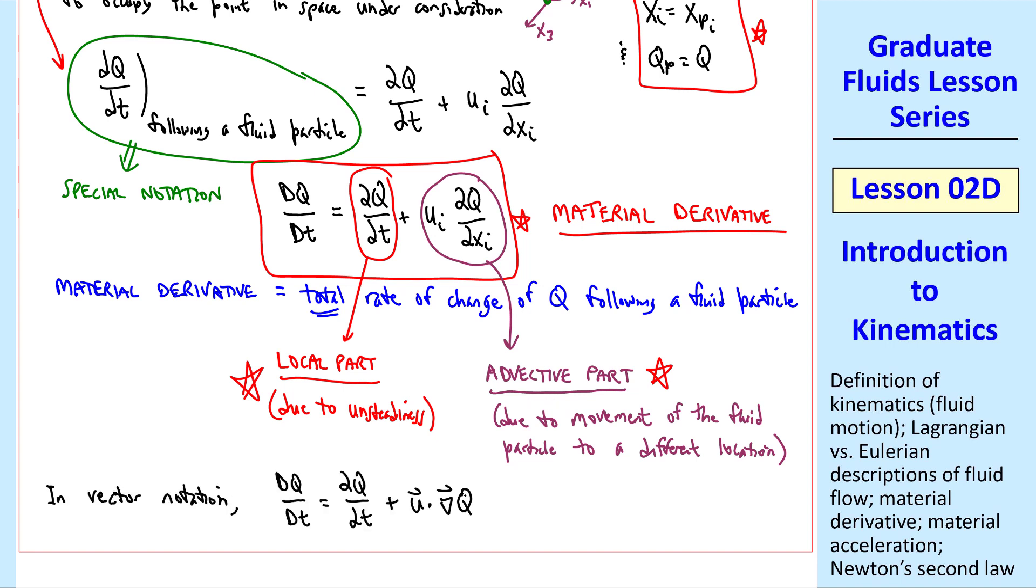In vector notation, if q is a scalar, dq dt is del q del t plus u dot del q. But as I said, in tensor notation this q can be anything, scalar, vector, or tensor.